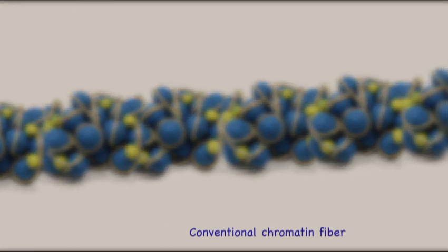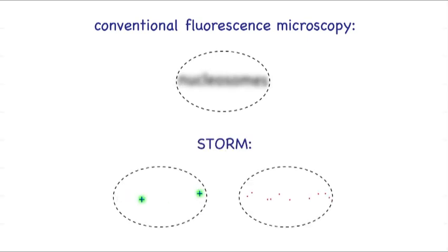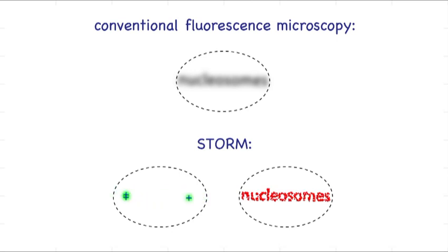Chromatin fiber is too small to be visualized with conventional light microscopy in single intact nuclei. Super-resolution microscopy like STORM breaks the diffraction limit by switching fluorophores between bright and dark states. At any given time, only a small subset of the fluorophores is in the bright state, and their positions can be precisely identified by finding the center position of their images.